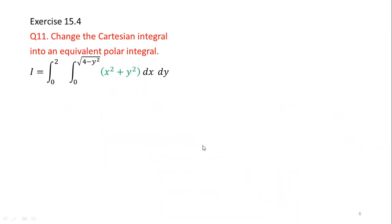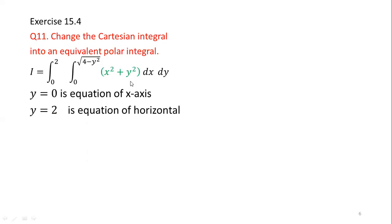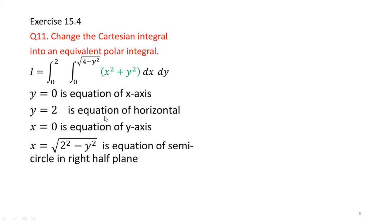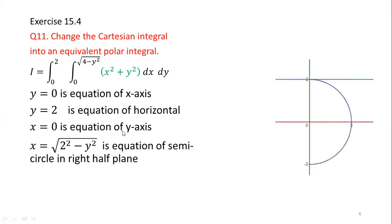Now we are able to solve this particular question, which is from Exercise 15.4 of Thomas Calculus 12th edition. The problem asks us to change the Cartesian integral into an equivalent polar integral. To convert this integral we first draw the region of integration. The limits of y are 0 to 2, so y = 0 is the x-axis and y = 2 is a horizontal line. x = 0 is the y-axis, and x = √(4 − y²) = √(2² − y²) is a semicircle centered at the origin with radius 2.